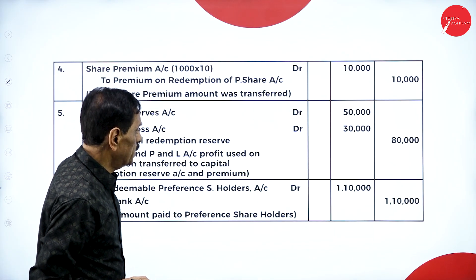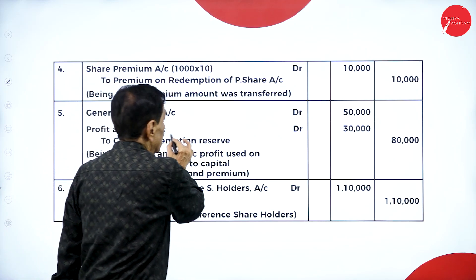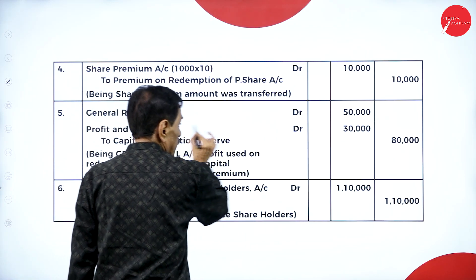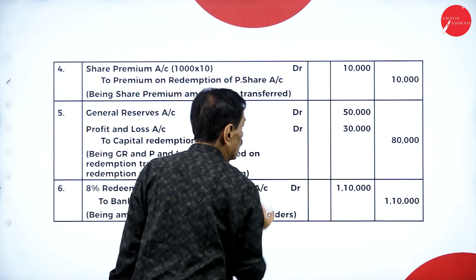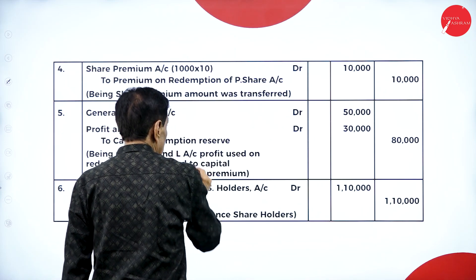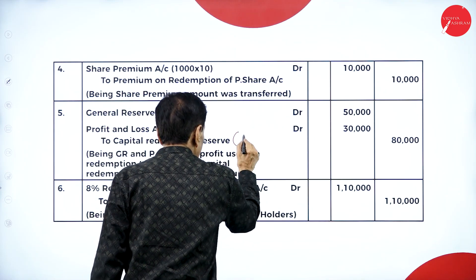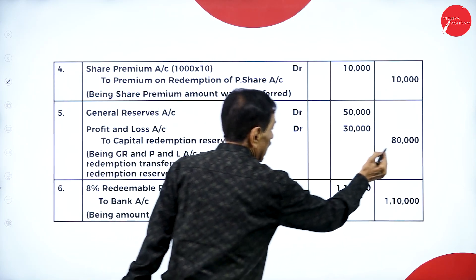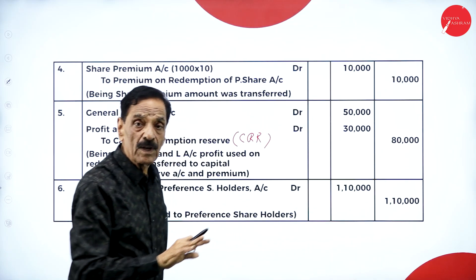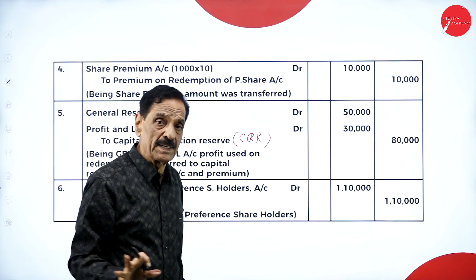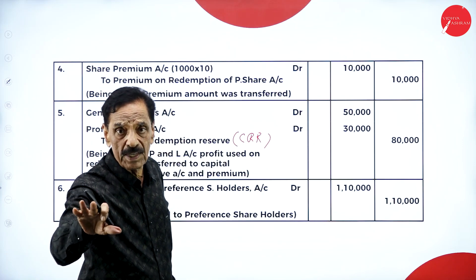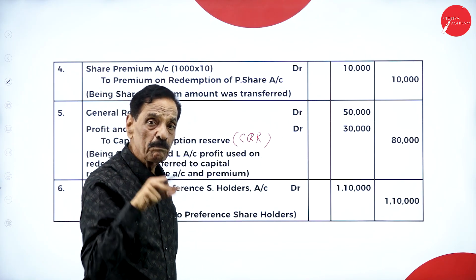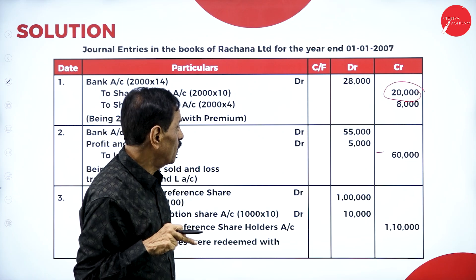Before the redemption, the entries for creating CRR are: General Reserve Account Dr. 50,000; Profit & Loss Account Dr. 30,000; to Capital Redemption Reserve 80,000. So your face value requirement is completed — twenty thousand from fresh share issue plus eighty thousand from CRR.